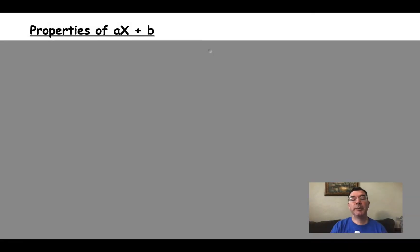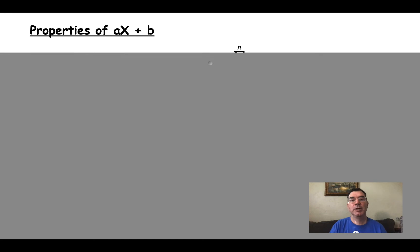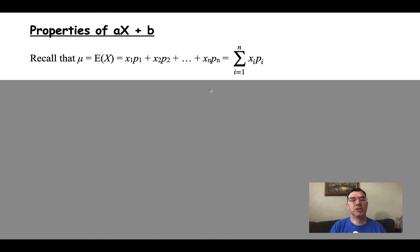Hello again. Today we're going to be talking about what happens when a variable x has been modified by possibly being multiplied by a constant a and possibly having a constant b added to it — what happens to the expected value of that distribution and what happens to the variance of that distribution. So let's get started.